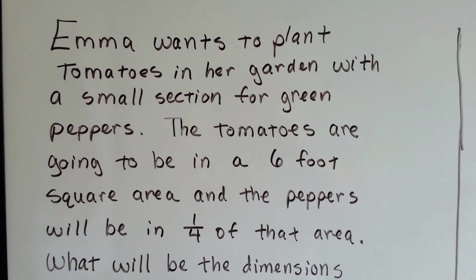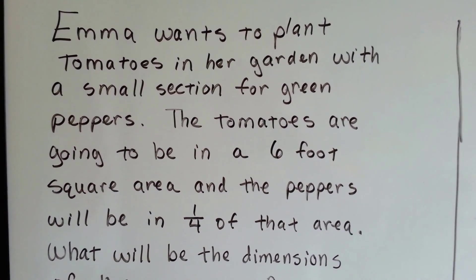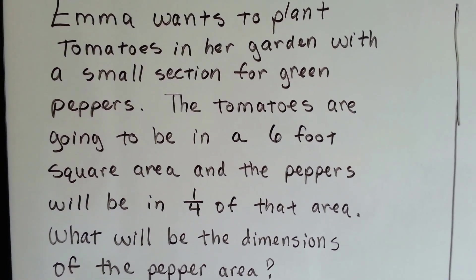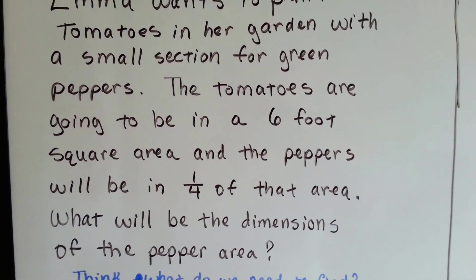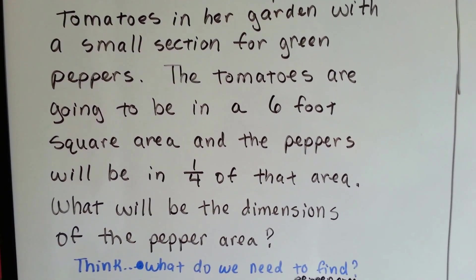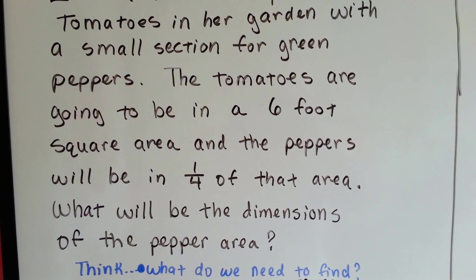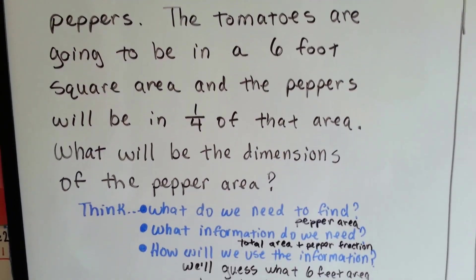Emma wants to plant tomatoes in her garden with a small section for green peppers. The tomatoes are going to be in a six-foot square area, and the peppers will be in one-fourth of that area. What will be the dimensions of the pepper area?